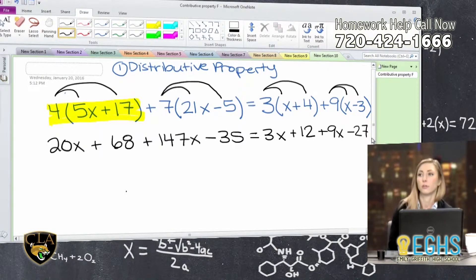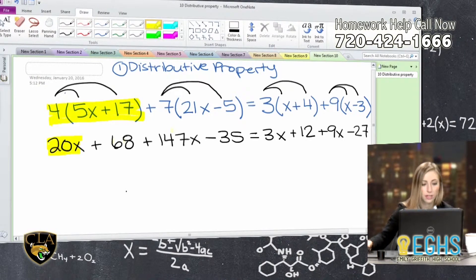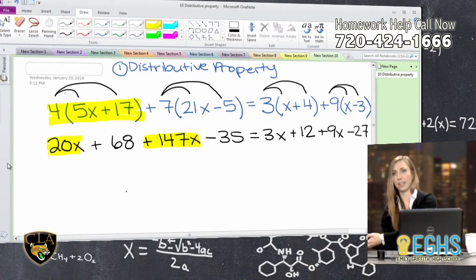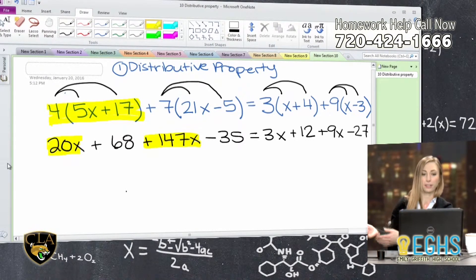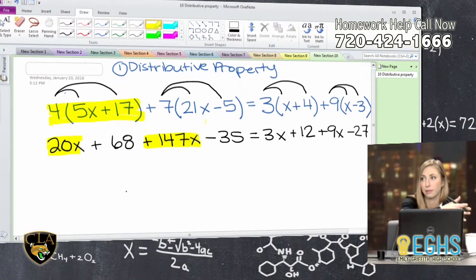Still quite a long equation. So we really haven't made things simpler, but we have kind of opened it up to where now we can start combining like terms, putting things together that are similar. So like terms would be, for example, this: 20x and positive 147x. 68 would not be a like term with 20x, because 20x is saying 20 x's. 68, there's no x's there. So when we combine like terms, we also want to make sure that we only do it on either side of the equation. We don't want to combine them all that are the same. That equal sign keeps things separate for us.